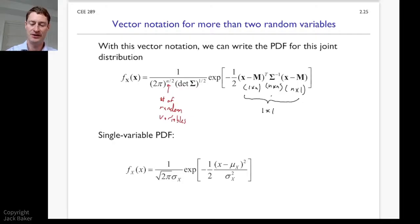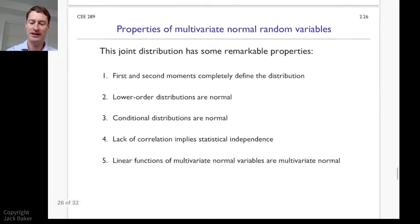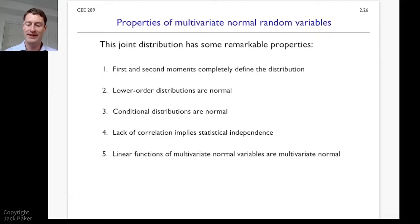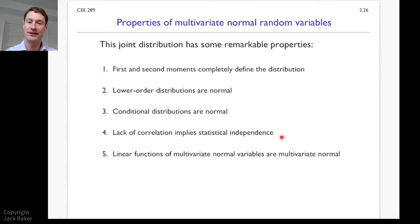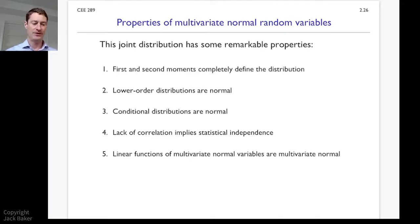Now let's talk about some great properties of the multivariate normal distribution. First, the first and second moments — the mean and the variance — completely define the distribution. Second, lower-order distributions are normal. Third, conditional distributions are normal. Fourth, lack of correlation implies statistical independence — if terms in that vector are uncorrelated, they're also independent. Fifth, if you take multivariate normal random variables and put them into a linear function, the output is also multivariate normal.